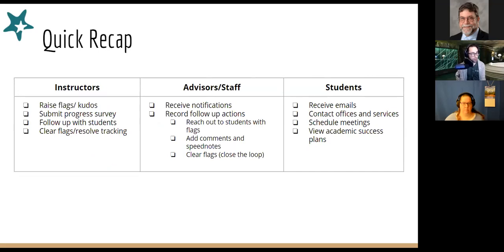As instructors, you have the ability to raise flags. If you notice an academic or behavioral concern with a student, you can raise a flag and allow the rest of their success network — all individuals connected to that student — to get that information. You also have the ability to submit the progress survey at the start of each semester in 100 and 200 level courses. And then following up with students — if you get a message in Starfish, you can contact them. You can also clear flags and resolve tracking items. If a student has a flag for excessive absences, comes in, you discuss what's going on, and it's been resolved, you can clear that flag.